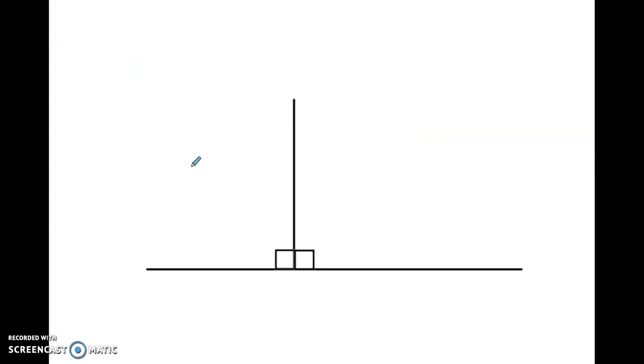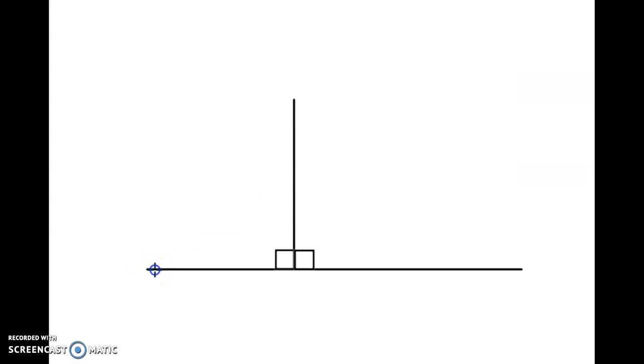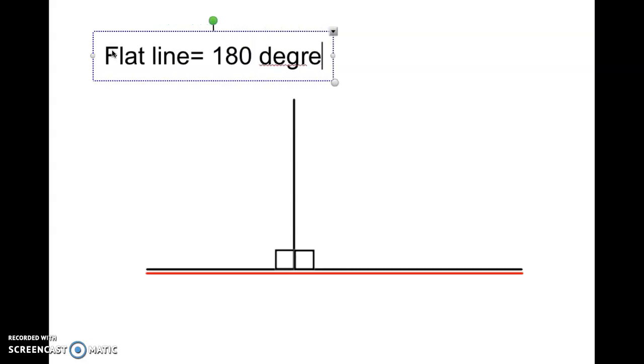For our next shape, we're going to do a little quick learning. In this case, if we look where our red line is, notice how I've put together two 90 degree angles just to show you, not only does a triangle equal 180 degrees, but a flat line also equals 180 degrees.